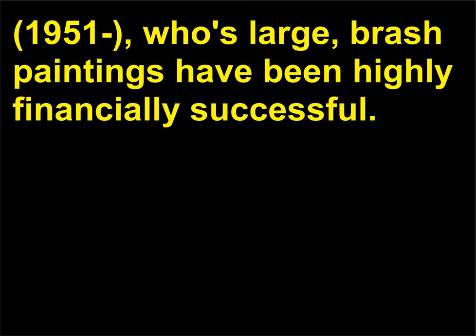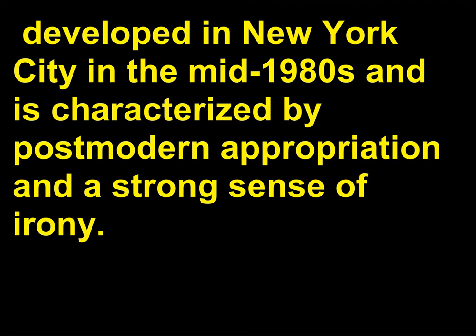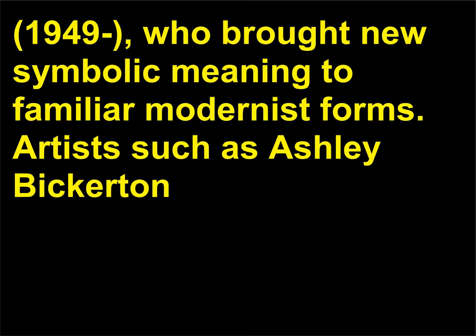Neo-Geometric Conceptualism, or Neo-Geo, developed in New York City in the mid-1980s and is characterized by post-modern appropriation and a strong sense of irony. Artists associated with Neo-Geo include Peter Halley, born 1953, and Ross Bleckner, born 1949, who brought new symbolic meaning to familiar modernist forms.